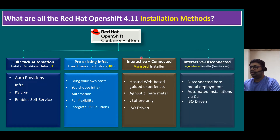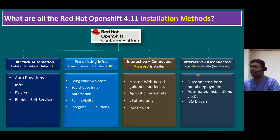The fourth method is the interactively disconnected Agent-Based Installer, intended for dark-site-type infrastructure. This method is specifically for agent-based installation and is currently in developer preview. In previous OpenShift versions 4.8, 4.9, and 4.10, this option was not available — there were only three methods: IPI, UPI, and Assisted Installer. From version 4.11 onwards, the agent-based installer was introduced. It supports disconnected bare metal deployments and automated installation via command line interface, also ISO-driven.